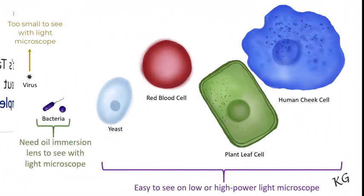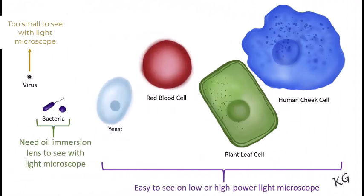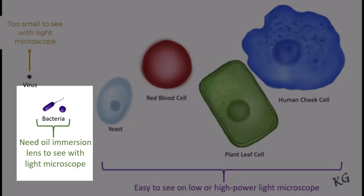If you have taken a biology course before, you probably looked at human cells under the microscope. For our cells, a total magnification of 400 times allows you to easily see your individual cells. But bacteria are tiny compared to your cells.